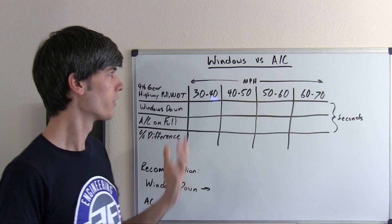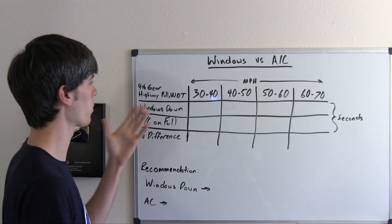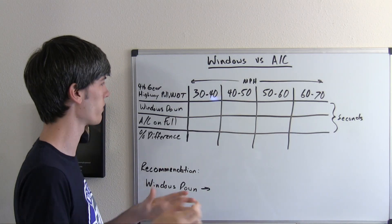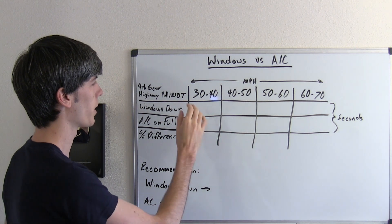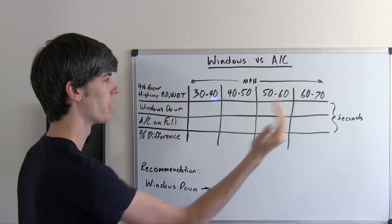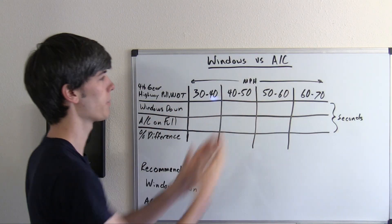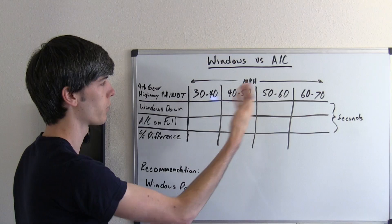So the test that I've set up is I'm going to be doing a fourth gear highway pull, leave it in fourth gear so there's no time difference from shifting gears, and keep it at wide open throttle. I'm going to accelerate from 30 miles an hour to 70 miles an hour at wide open throttle and then take these different time intervals and see how long it takes to accelerate from 30 to 40, 40 to 50,